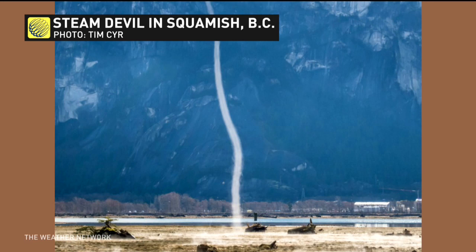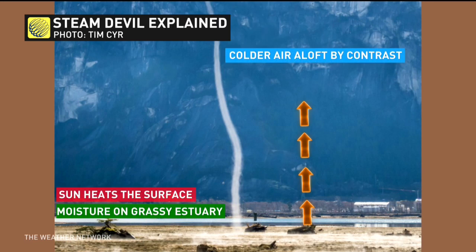It's the same kind of thermodynamics at play — the surface is warm, the air aloft is cold. It's just that it's relatively warmer overall than what it would be in January. We have this grassy area near an estuary of a lake, or at least a river or some sort of water channel, so there's a lot of moisture. Even though this is forming over a grassy area, that moisture is rising into much colder air aloft. The sun is very powerful this time of year, so the heat at the surface is relatively a lot warmer than the colder air aloft. We still get that instability, and in this case, an incredible shot of a steam devil in March.